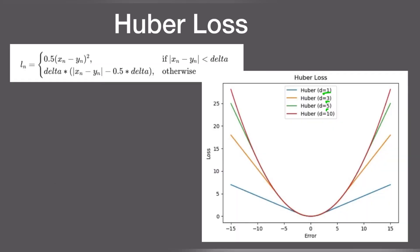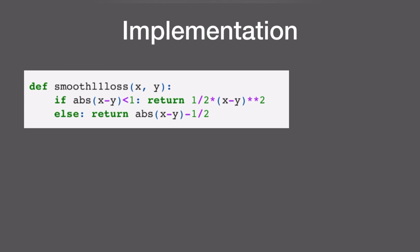As this delta or beta value increases, the curves become more quadratic. With the initial value of delta equal to 1, the quadratic region spans from minus 1 to plus 1. As we increase the delta term, this quadratic window expands — minus 5 to plus 5, minus 10 to plus 10, and so on. So delta is actually controlling the choice of using either L2 loss or L1 loss. The implementation is pretty simple and straightforward: you calculate the difference between predictions and ground truth, and if it is less than 1 or beta, you do one particular calculation; otherwise you do another. It is very simple.